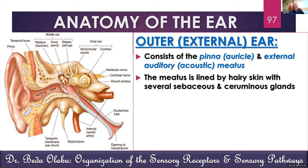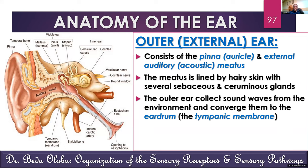With regard to the auditory canal, it is lined by hairy skin. The skin of the auditory canal contains several sebaceous glands as well as ceruminous glands. The ceruminous glands are modified apocrine sweat glands. These modified apocrine sweat glands produce cerumen, which is the wax of the ear. They are found within the auditory canal.